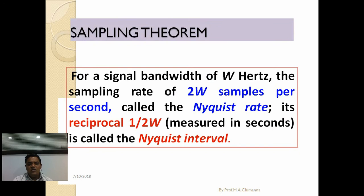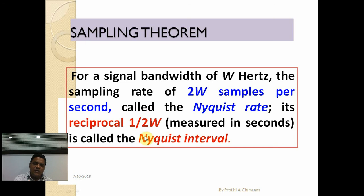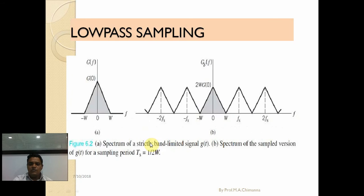For the sampling theorem, for a signal bandwidth of W hertz, the sampling rate of two W samples per second is called the Nyquist rate. The Nyquist rate is the reciprocal of one upon two W, measured in seconds, which is called the Nyquist interval.